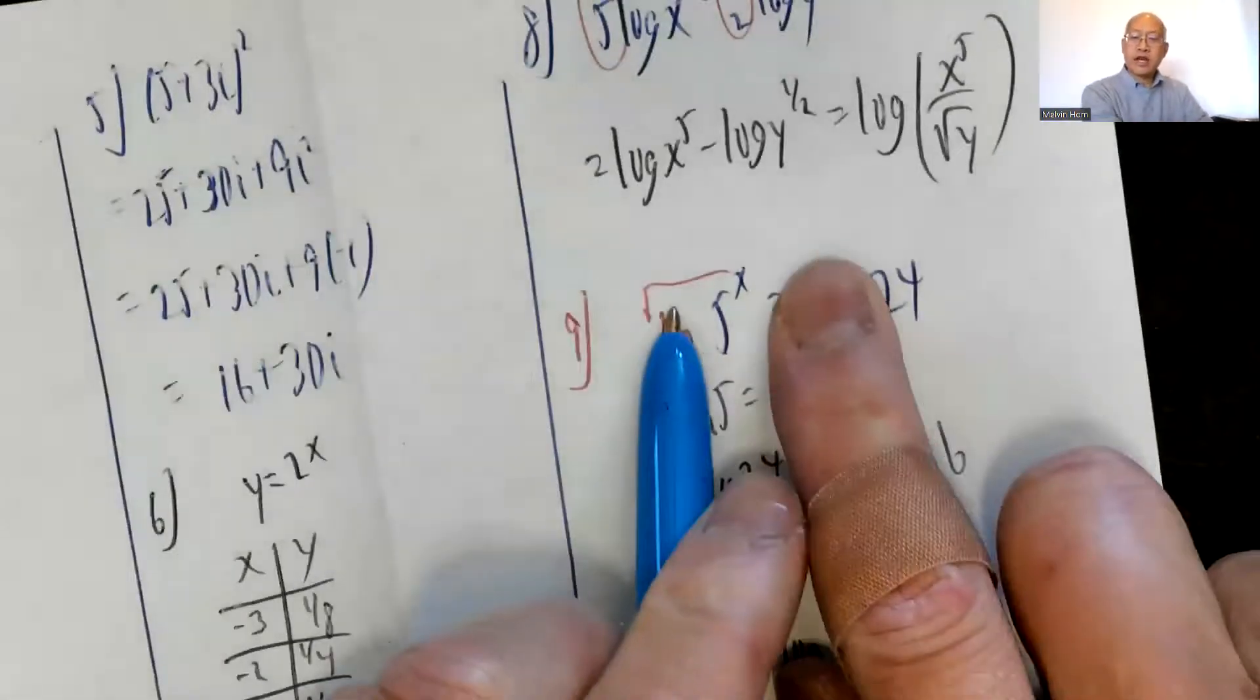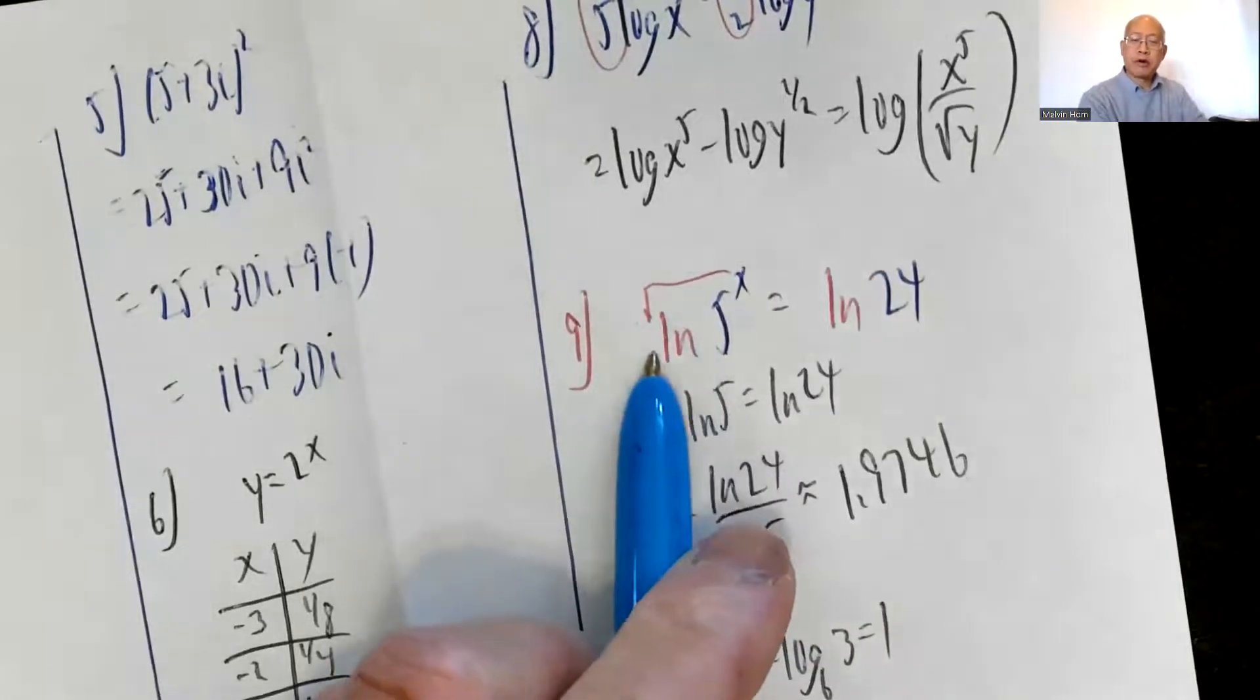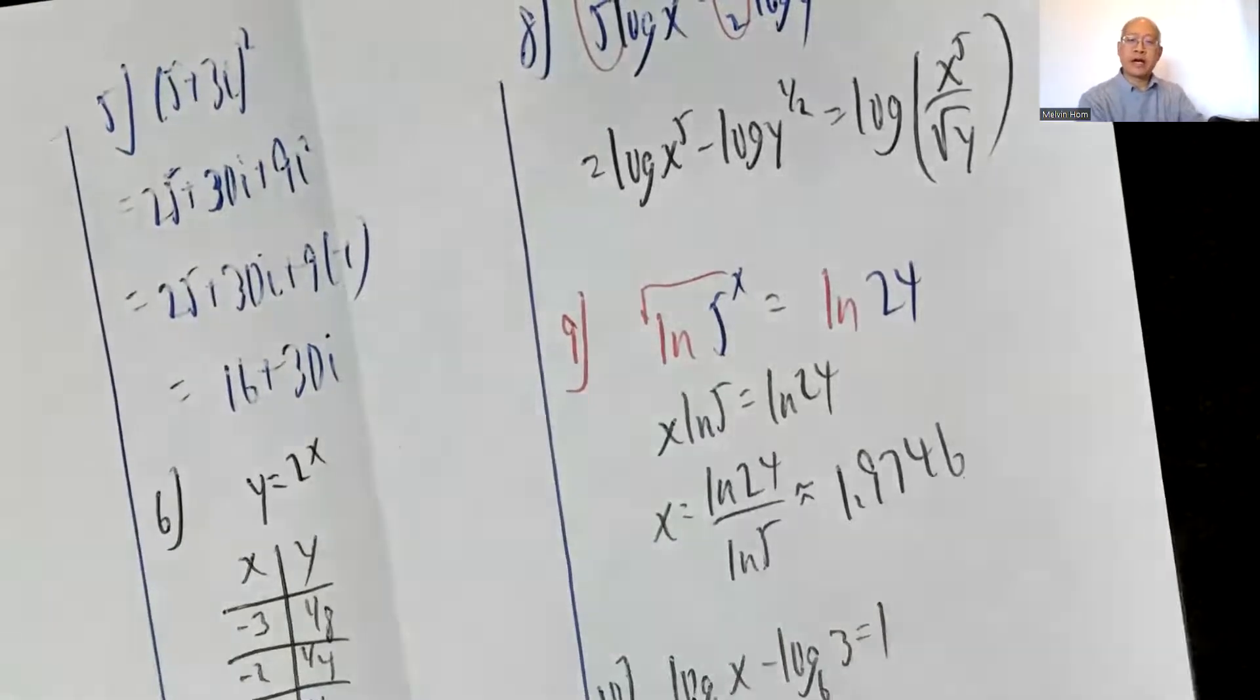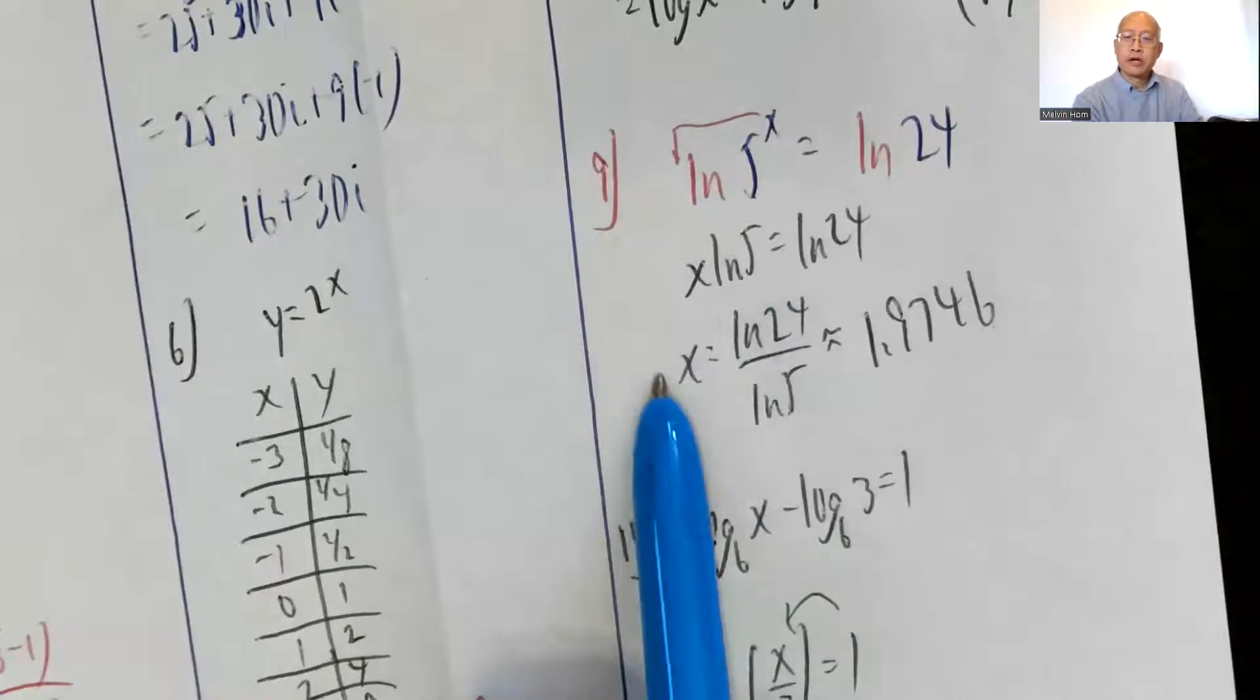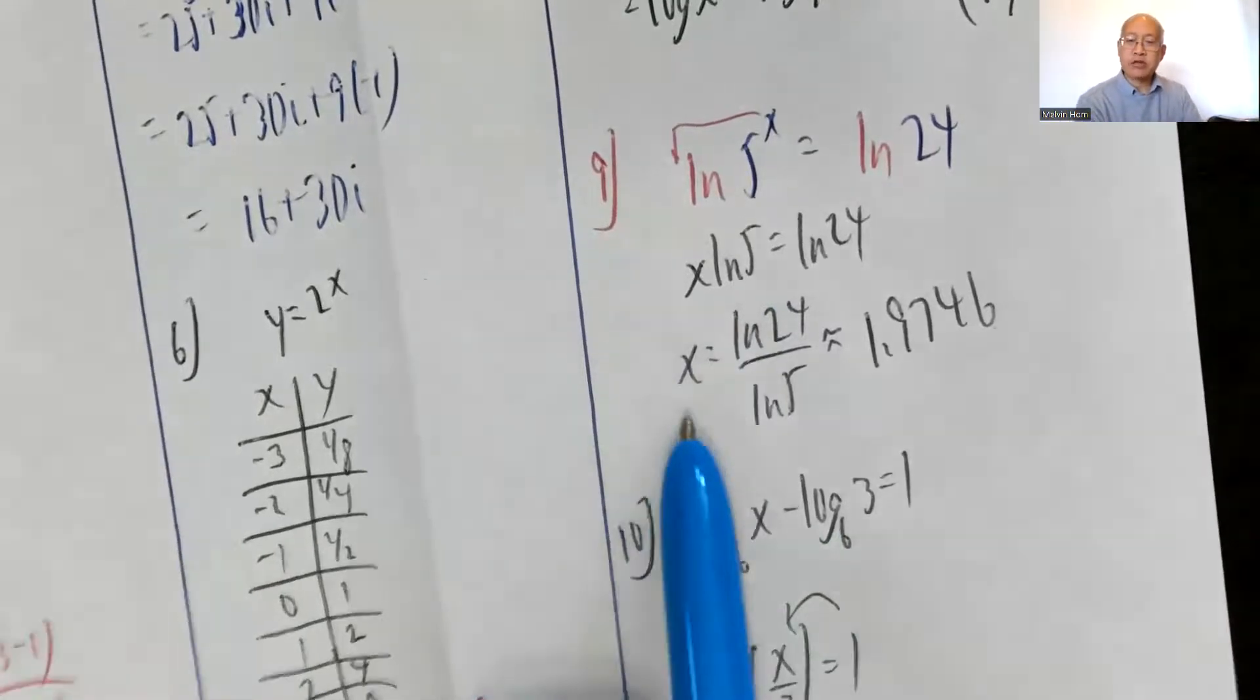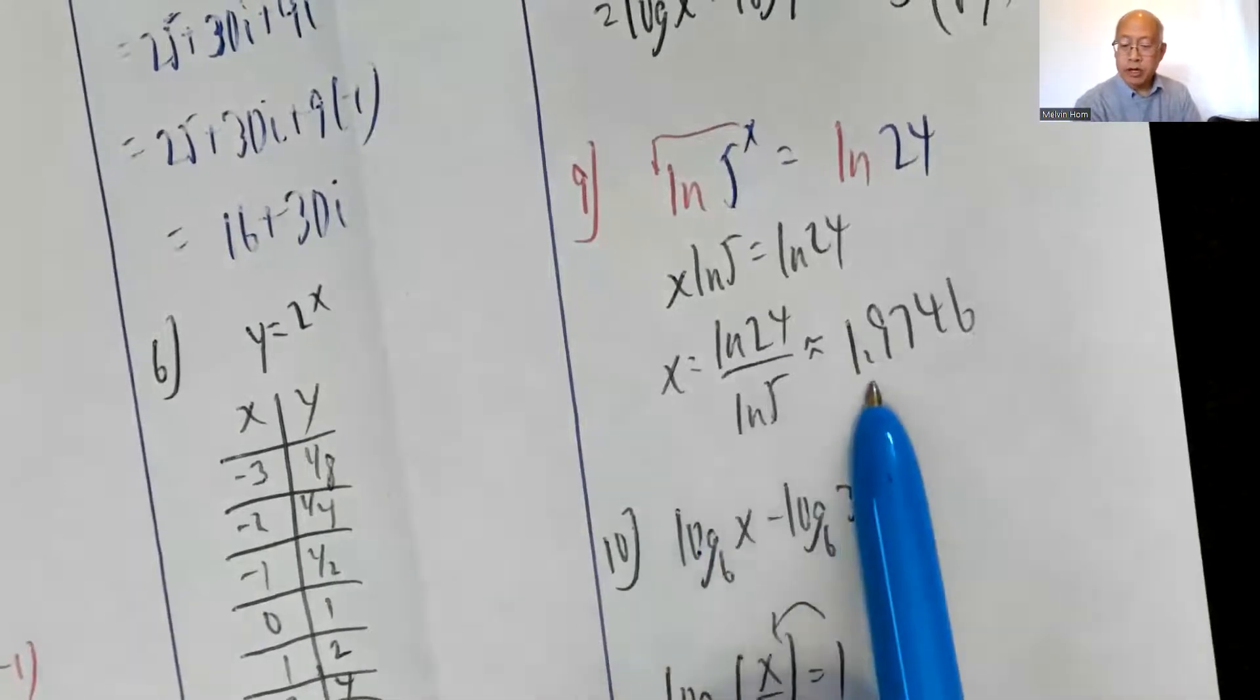Number 9: 5 to the x equals 24. Take a natural log of both sides. You could also do it with common logs. But by putting ln here, you're allowed to take that x down. So x ln 5 equals ln 24. Divide by natural log of 5. X is natural log of 24 divided by natural log of 5. Punch it in your calculator. It's about 1.9746.